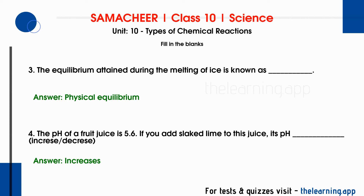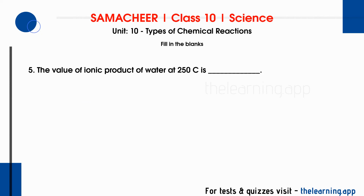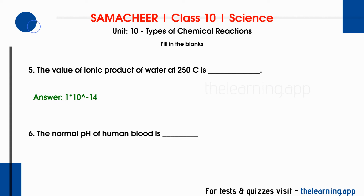Fourth question: The pH of a fruit juice is 5.6. If you add slaked lime to this juice, its pH dash. Correct answer is increases. When slaked lime (a base) is mixed with the fruit juice (acidic), the pH value increases. Fifth question: The value of ionic product of water at 25°C is dash. Correct answer is 1×10^-14.